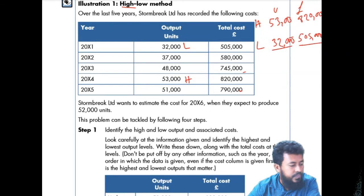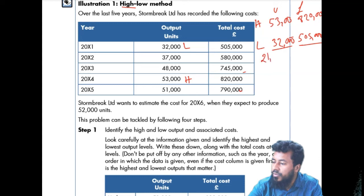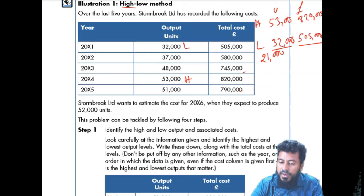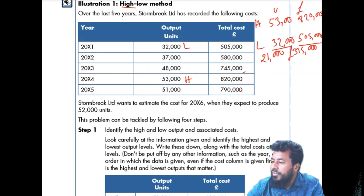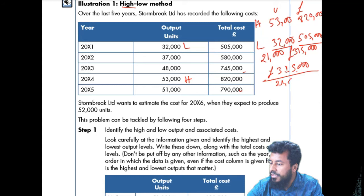Now get the difference. Using a calculator: 53 minus 32 gives 21,000 units difference. And 820 minus 505 gives 315,000 in cost difference. What you have to do is divide money by units — the difference of money divided by the difference in units: 315,000 divided by 21,000 gives 15.